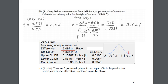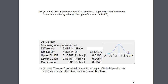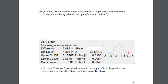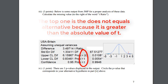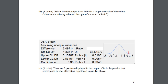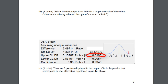When circling the p-value, make sure to get the one corresponding to men in the United States being taller than men in Britain. Since we have it written as USA minus Britain greater than zero, we use the greater-than p-value, which is 0.0054. The difference was 3.49, marked with a red line. Note that the two-sided p-value is double the smallest, and the less-than and greater-than p-values add up to 1.